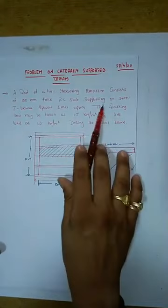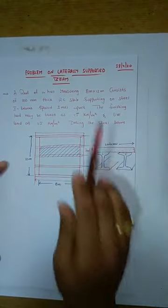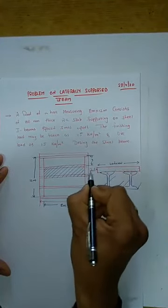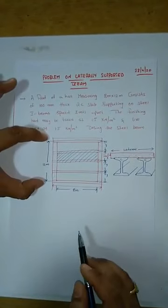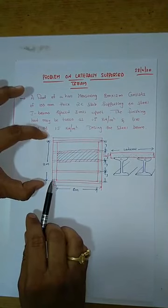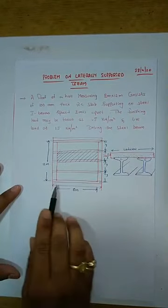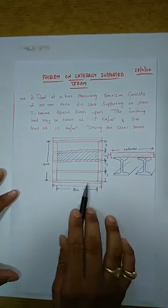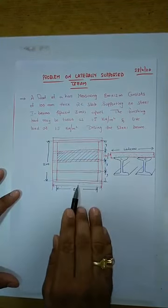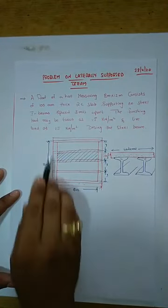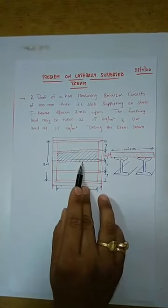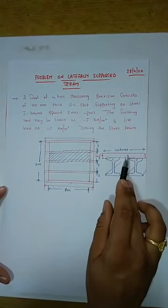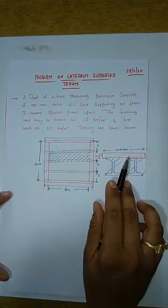The roof is supported on steel I-beams spaced three meters apart. From beam to beam the distance is three meters, making the overall length of the longitudinal major beam 12 meters. The minor beams — there are five of them — are connected laterally to the major beams and they support the roof of the hall.